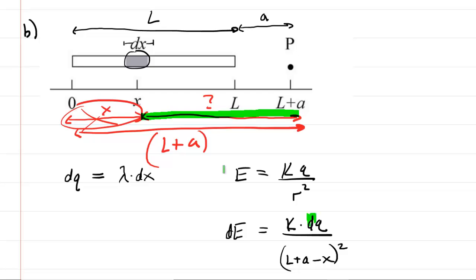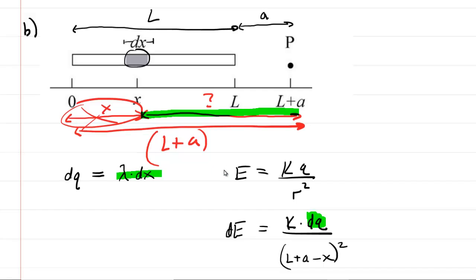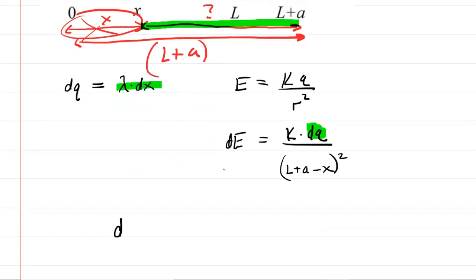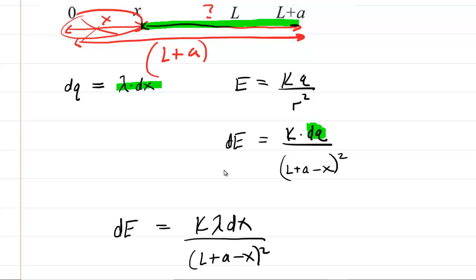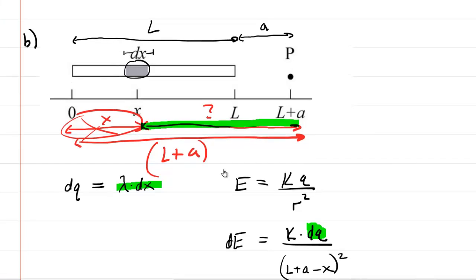Now we substitute for dq the expression lambda dx that we developed earlier, giving us a nice expression for the electric field produced by that differential charge element. Notice that because the rod is negatively charged, this differential element is also negatively charged, and electric fields point towards negative charge. So at point P, the electric field would be pointing to the left — that will help us with part C when we predict the direction. Right now we're focused only on magnitude, so we're good to go with this expression.